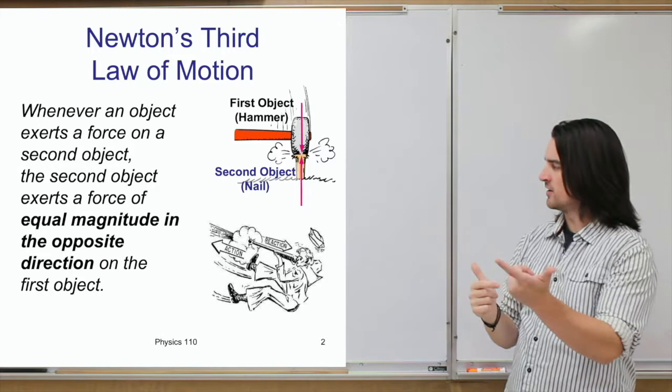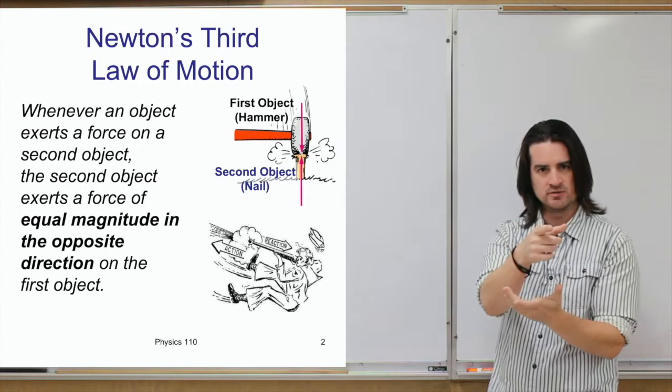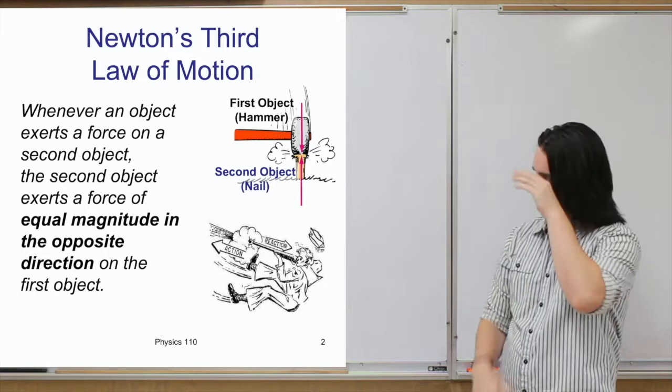Another example: when you fire a rifle or a gun, there's a force that the gun puts on the bullet in order to shoot it out of the barrel. The bullet then also exerts an equal amount of force in the opposite direction — backwards — on the gun. That's where you get recoil.